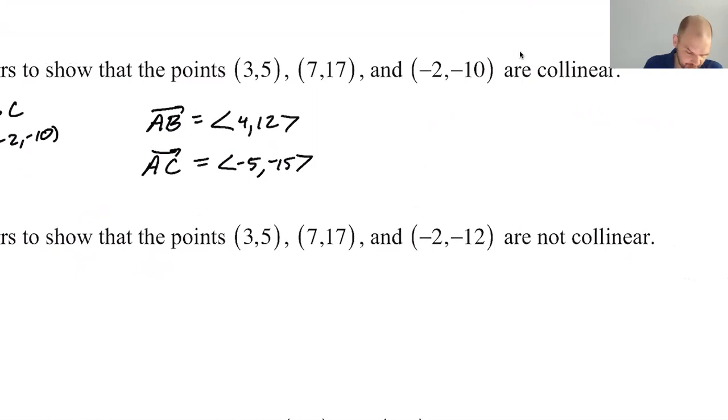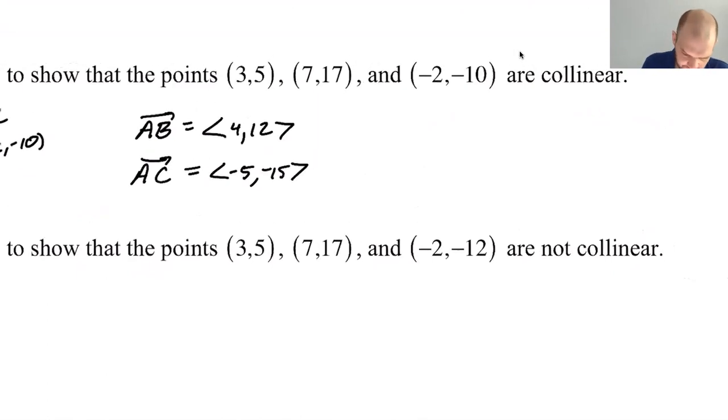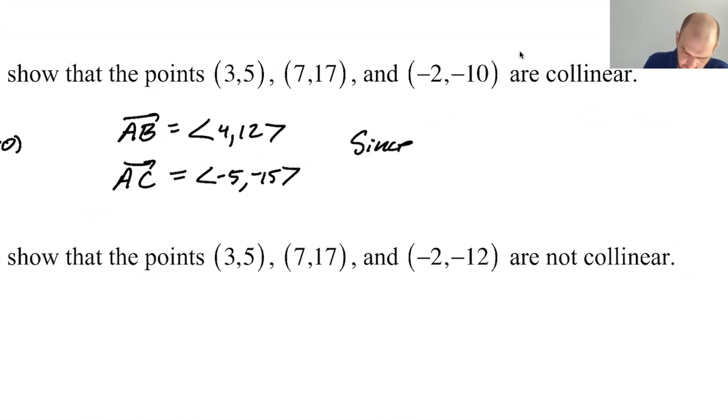And then the vector AC is going to be negative 2 minus 3 is negative 5. And then negative 10 minus 5 is negative 15. OK. So now the question is, are these scalar multiples of each other? Well, what's the easiest thing to do here? Divide by, yeah, I think, so I'm going to say since AB is equal to, so if I divide AC by negative 5, I get (1,3). And then if I multiply that by 4, I get (4,12).